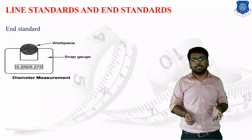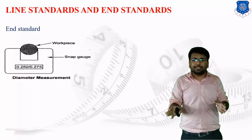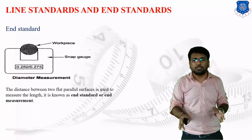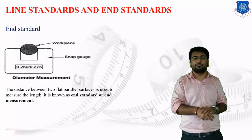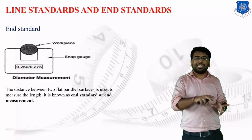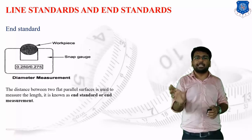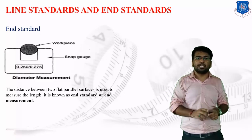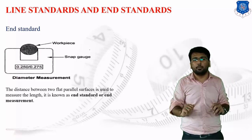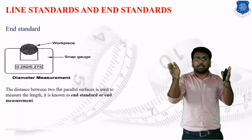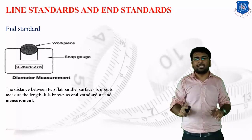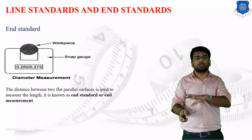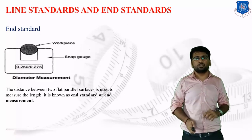The next one is the end standard. For the end standard, if you have to measure the distance between two flat parallel surfaces, whatever procedure is followed is known as end measurement, and the standards followed are known as end standards. Suppose you have to measure the diameter of a ball — you simply take a Vernier caliper, place the ball inside it, and measure the external dimensions. The diameter is exactly equal to the linear distance between the two flat parallel surfaces of the caliper jaws.